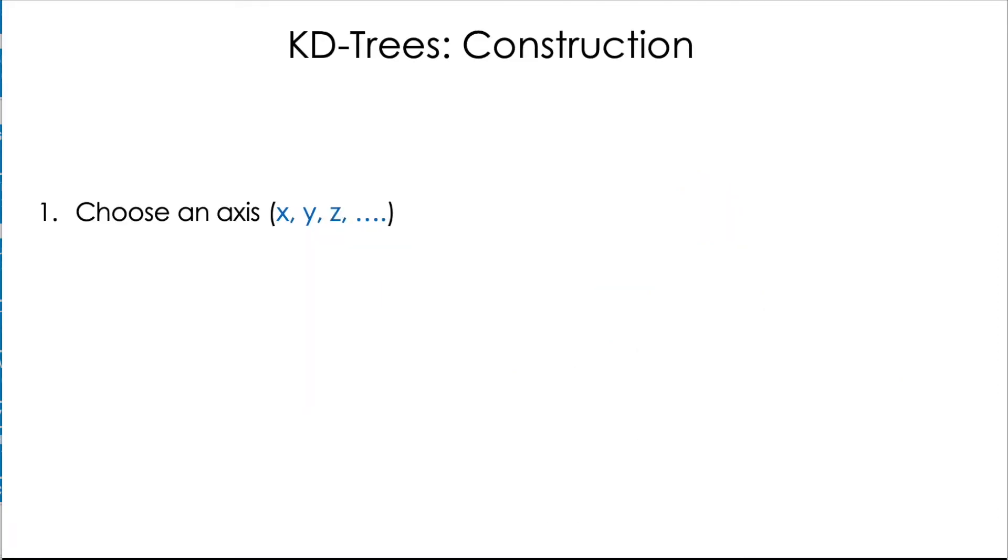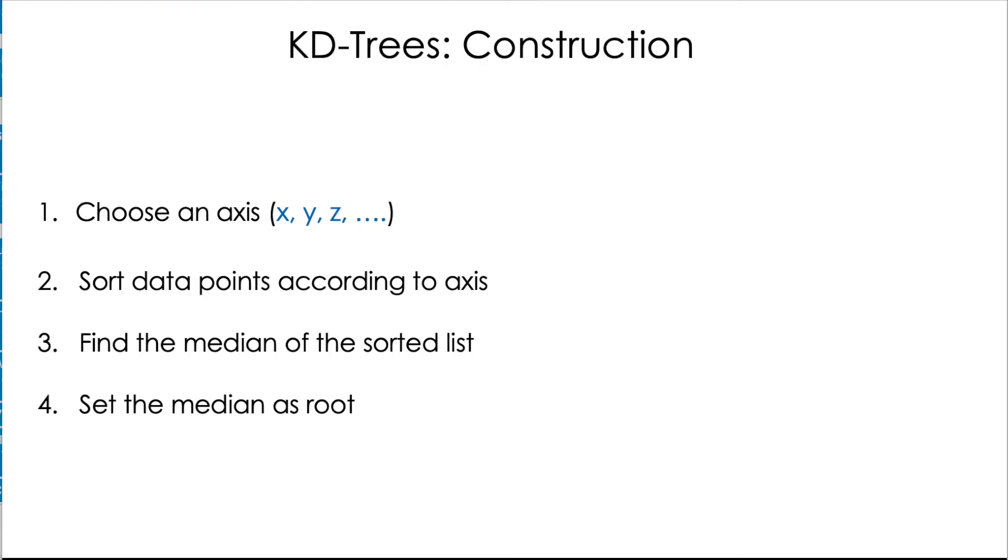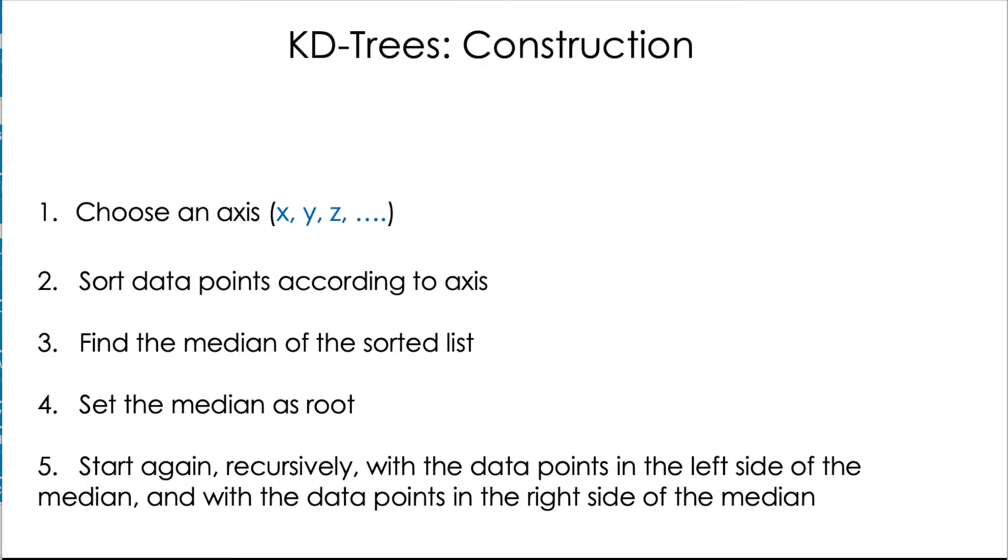How do we construct automatically this tree? Well, it turns out that the algorithm is quite simple. First, we need to choose an axis, for example x, and then we sort our data points according to that axis. After that, we find the median of the sorted list and we set that median as root of the tree. And we start again recursively calling the same four steps for the list of points that are in the left side of the median and also calling recursively for the data points that are in the right side of the median.